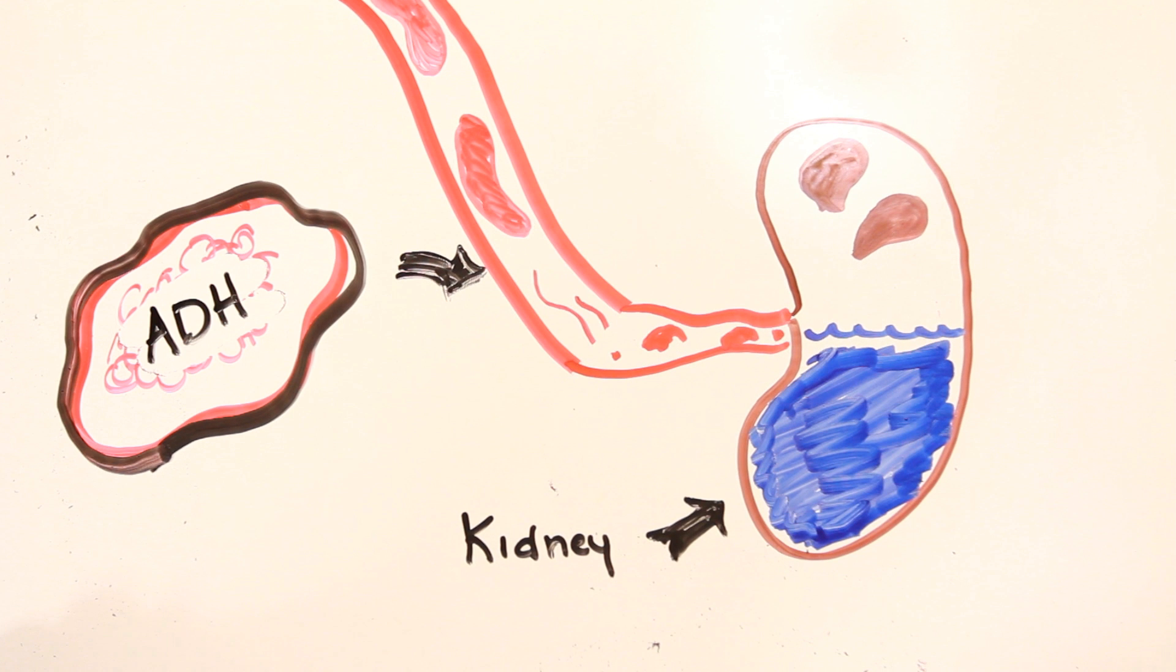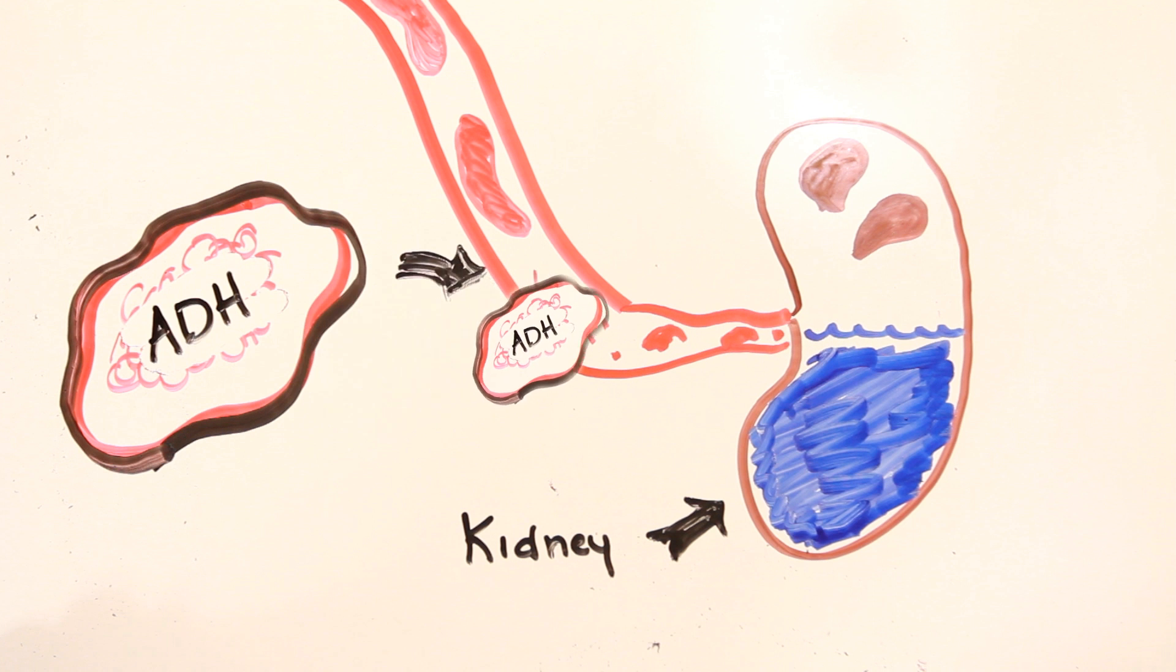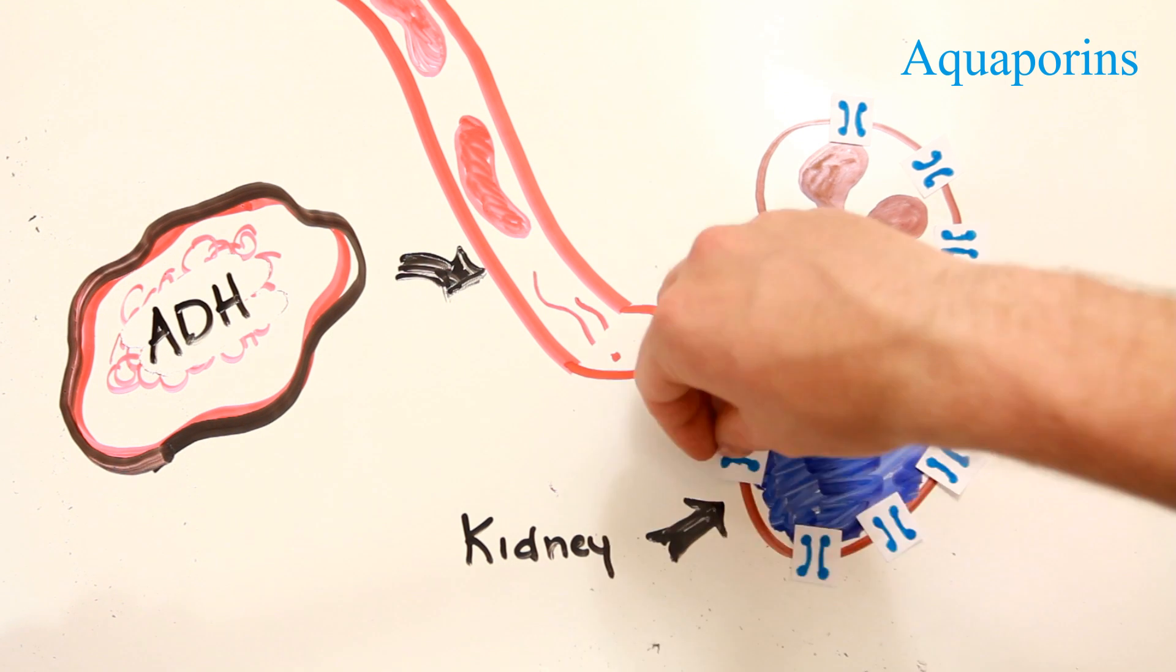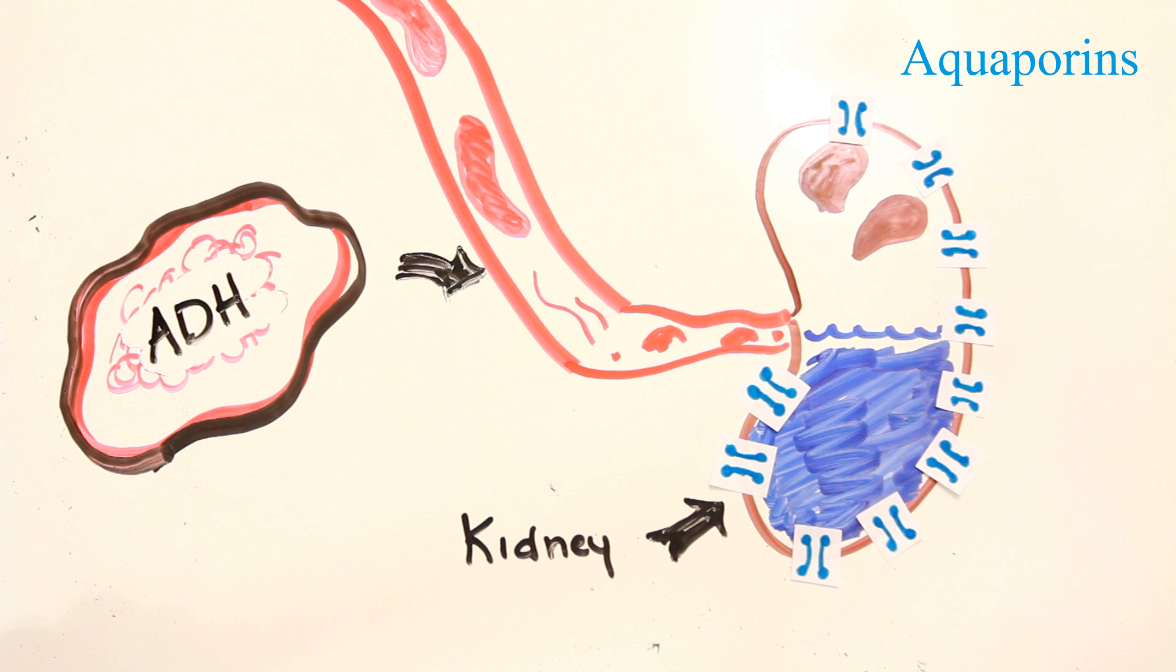In times of dehydration, this ADH is responsible for retaining water in your body by inducing the production of aquaporins in the kidney. Aquaporins are proteins embedded in the kidney cell membrane that regulate the flow of water, in this case, allowing water to be reabsorbed back into the body.